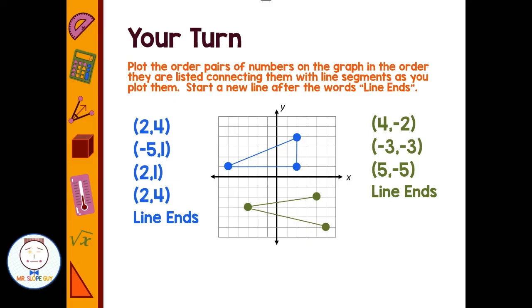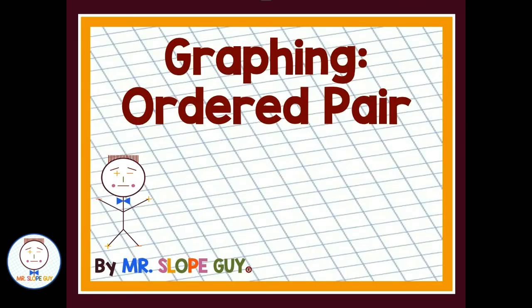So I hope that helps you guys figure out ordered pairs. They're x comma y. Remember, first number's left or right, second number's up or down. Have a great day.